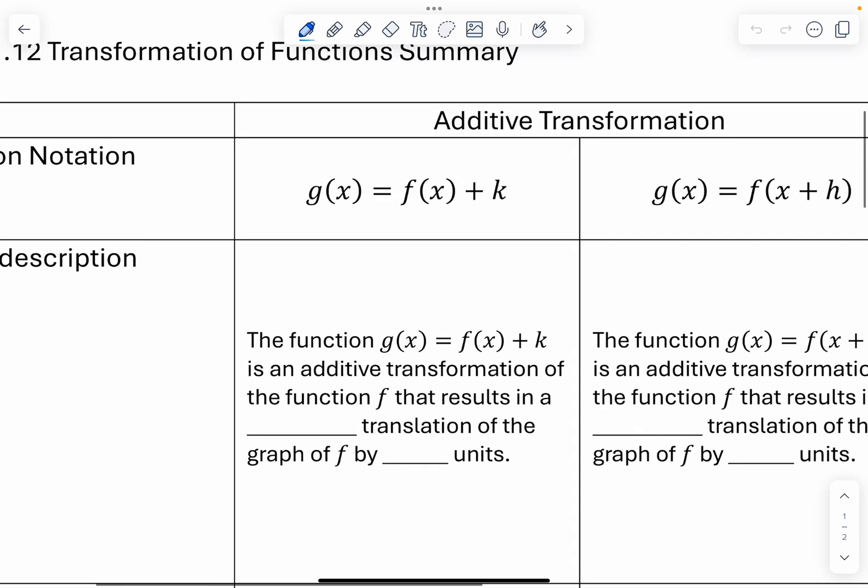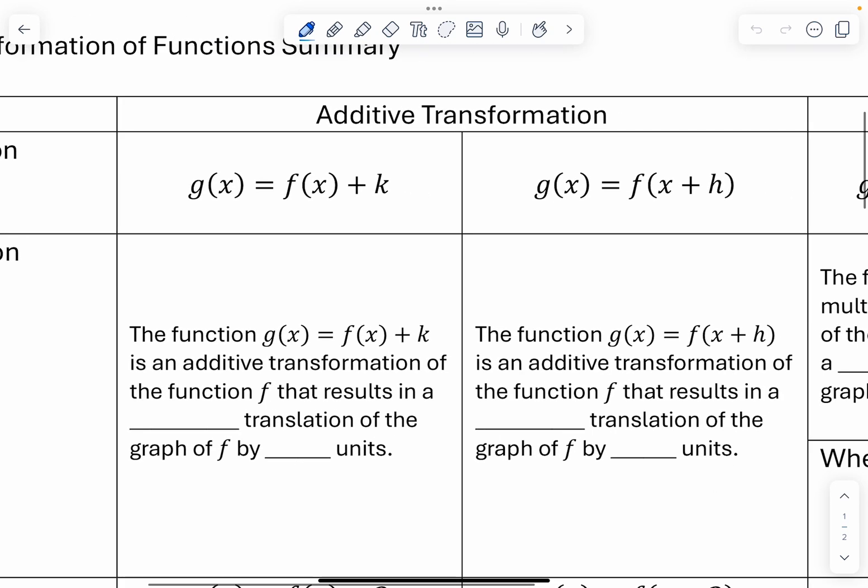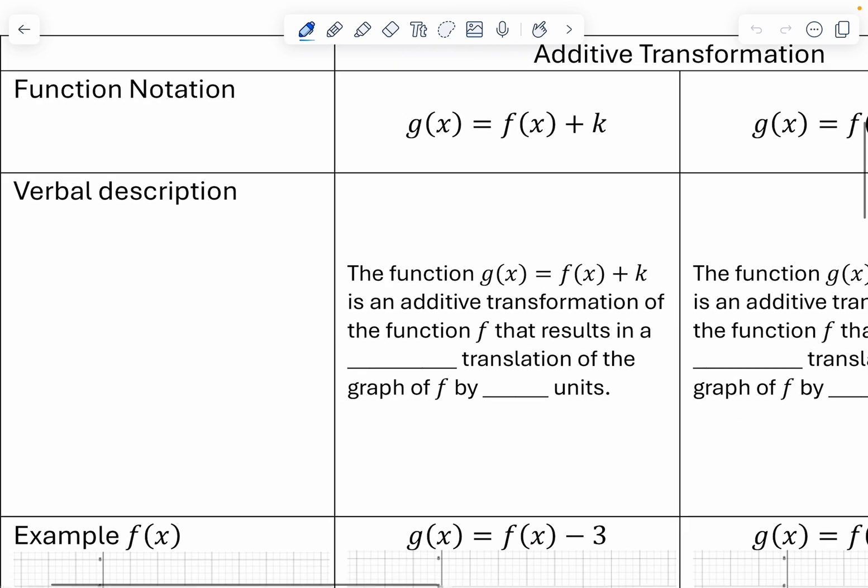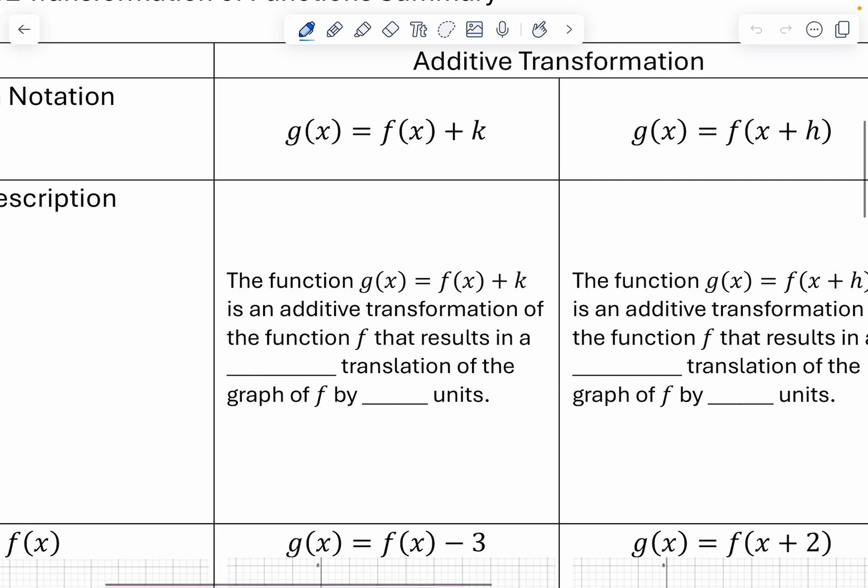So we've got two additive transformations. We could do where the function g is equal to f of x plus k. Here's the verbal description, and I pulled this straight from AP Precalculus. The function g(x) equals f(x) plus k is an additive transformation of a function f that results in a vertical translation of the graph by k units. So it's a vertical translation, a shift up and down.